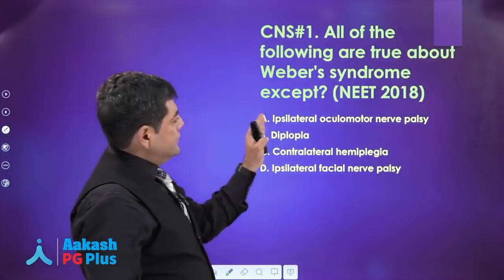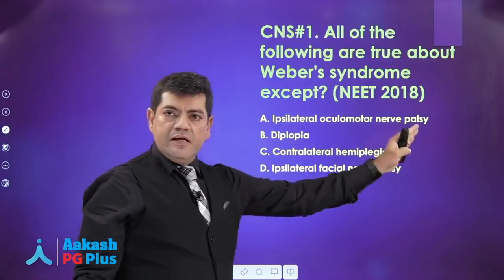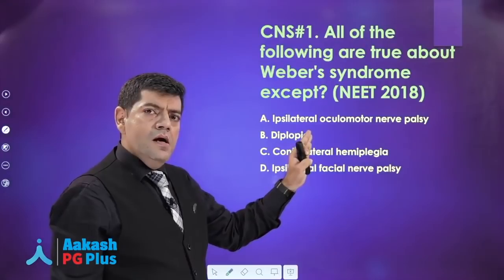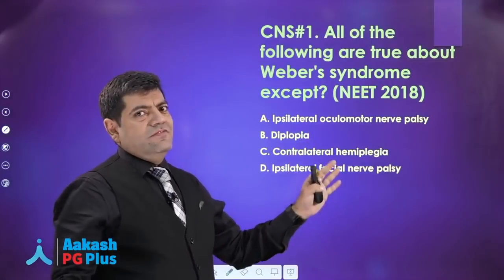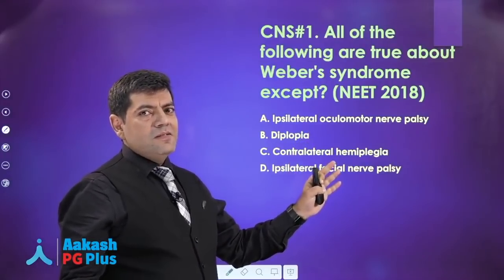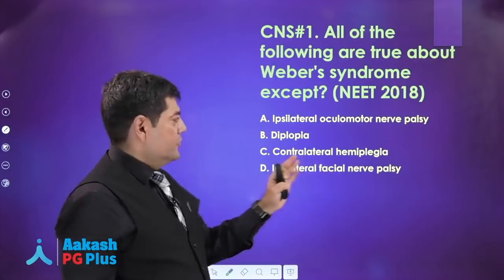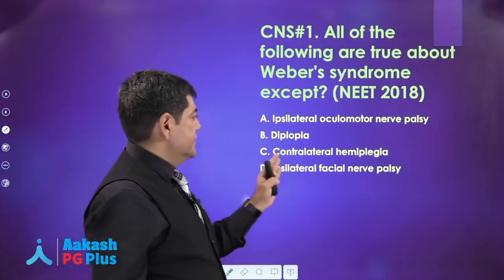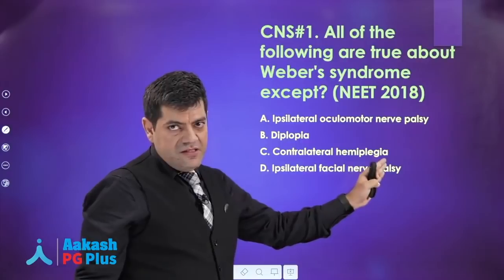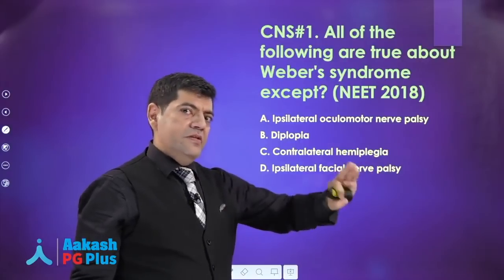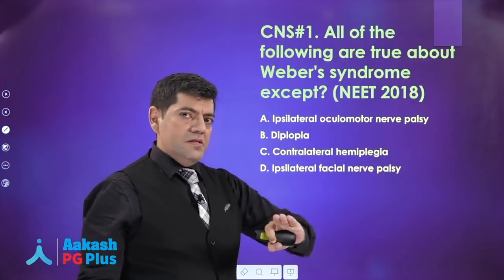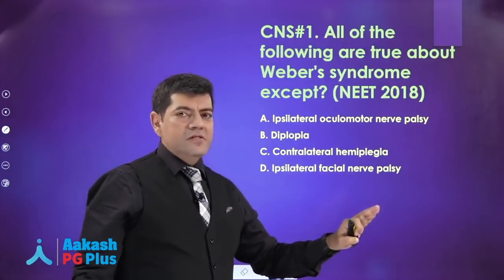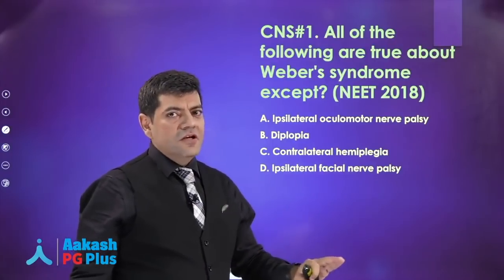Going back to the question: they will have an ipsilateral oculomotor nerve palsy. Why would they have diplopia? One side of extraocular muscle palsy is definitely going to cause diplopia in certain gazes. Contralateral hemiplegia — Weber's syndrome involves the cerebral peduncle, so contralateral hemiplegia. However, ipsilateral facial palsy is NOT a feature of Weber's syndrome.